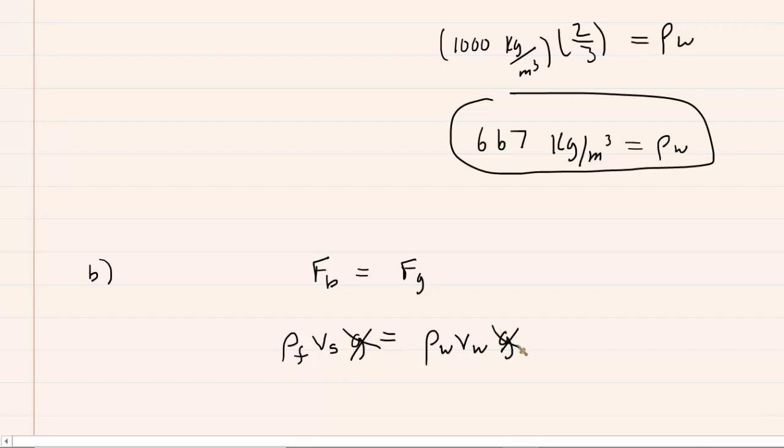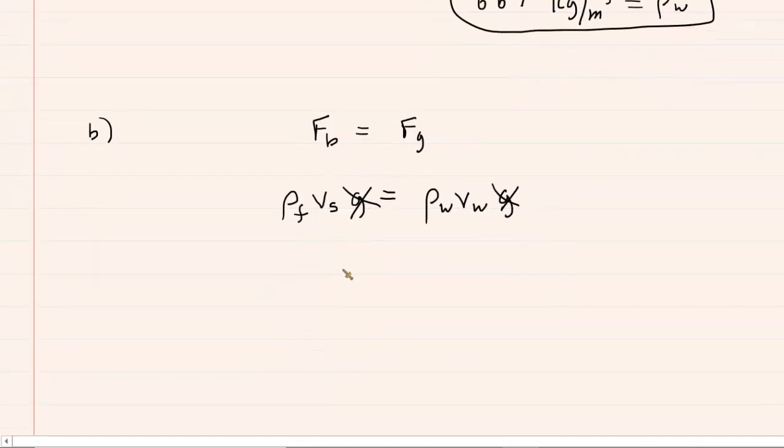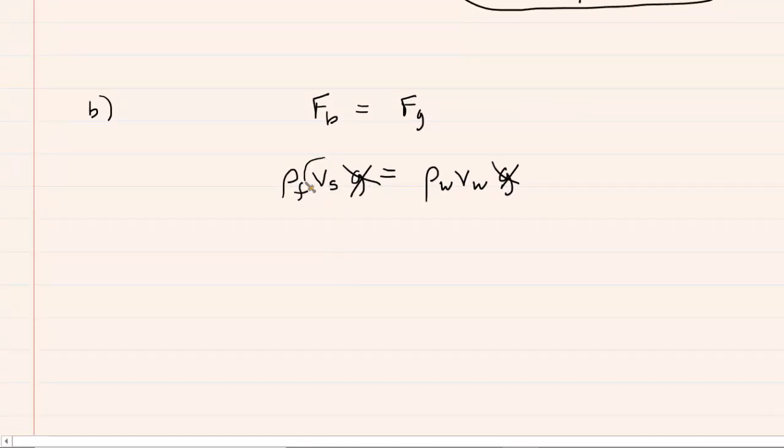Just like before, you can cancel out the Gs. Now, we were told that the submerged volume was 0.9 multiplied by the volume of the block. So, in other words, this V sub S, we're going to substitute 0.9 multiplied by the volume of the wooden block. Basically, 90% of the volume is submerged within the fluid. Over here, we have the density of the wooden block multiplied by the volume of the wooden block. The volume of the wooden block, once again, cancels out.